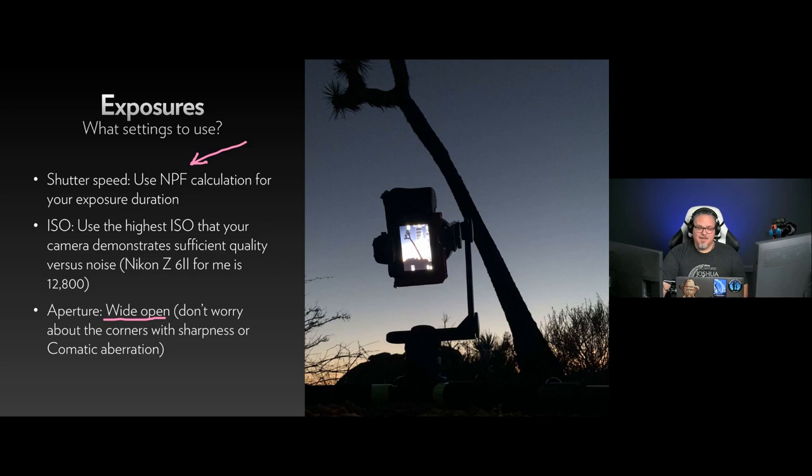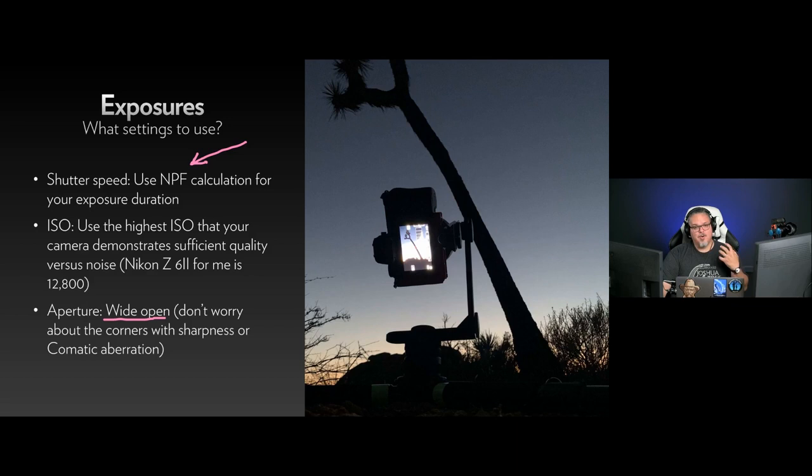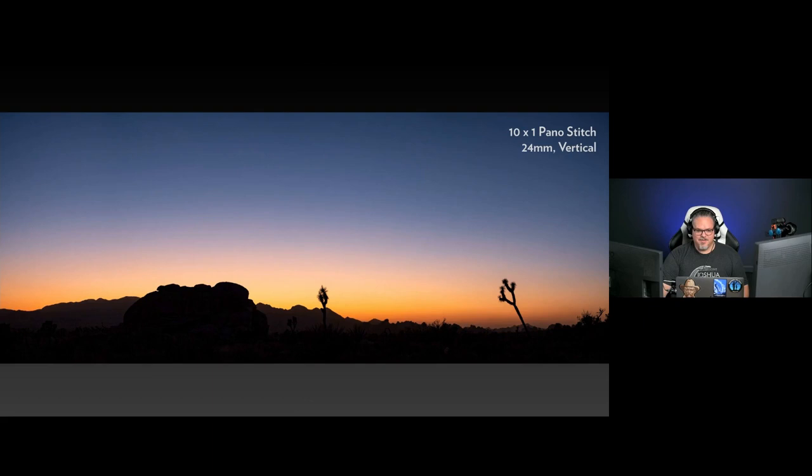I would suggest shooting wide open — the widest your lens can be. Normally I would talk about stopping down until the coma disappears — the comatic aberration that makes those funny planet-shaped stars at the corner of your lens. But the more light you let in and the higher ISO, the more brilliant the stars are going to be, the more brilliant your Milky Way is going to be.